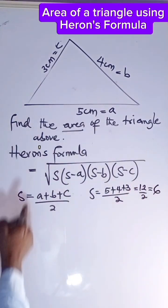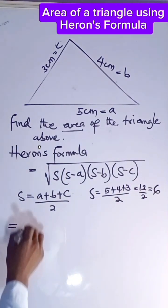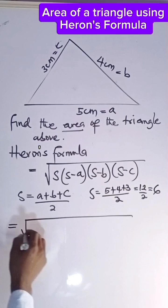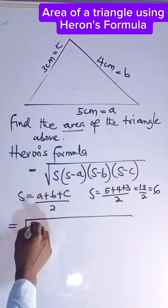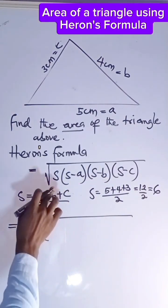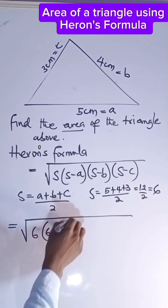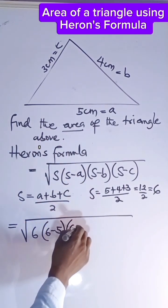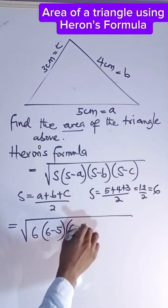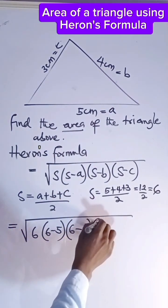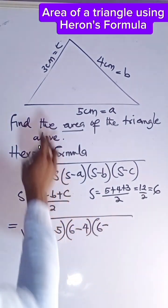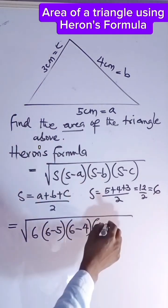So trying to apply the formula here, we have it to be: the first one is 6, then we have 6 minus a, that's 6 minus 5, then followed by 6 minus b. Our b is 4. Then we have 6 minus c, which is 3.